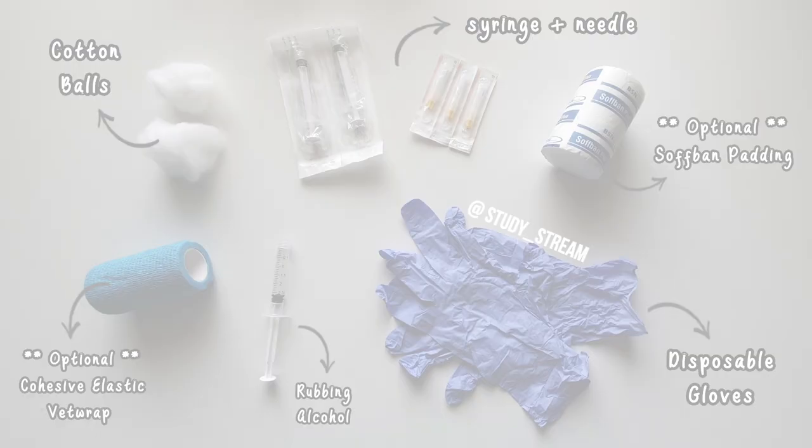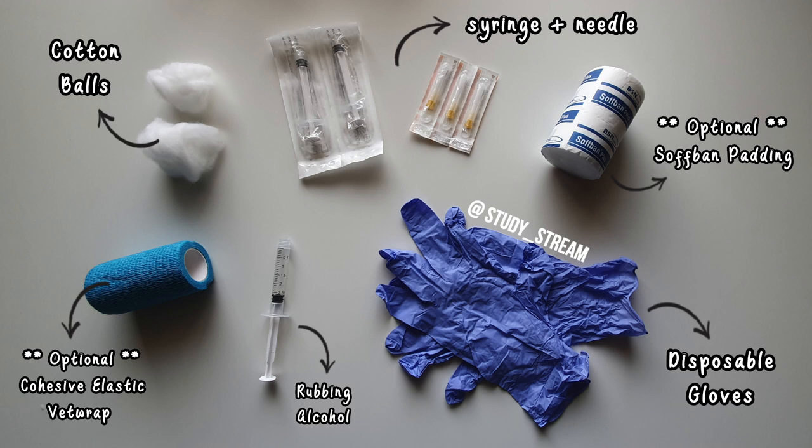Cotton balls, syringe and needles, any size and any needle gauge is okay. Disposable gloves. Rubbing alcohol or water can be used for practice. Soft band padding and vet wrap are optional if you want to use your model to practice bandaging.